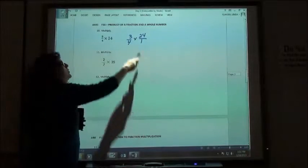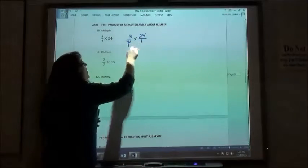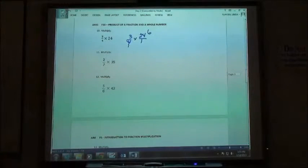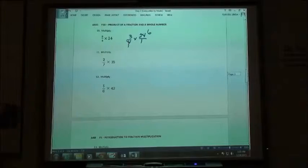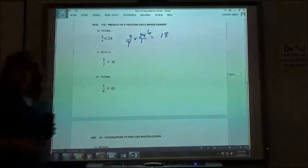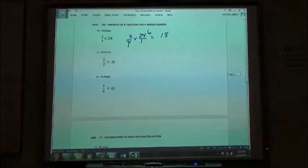So first thing I'm going to do is reduce my fraction. 4 divides into 24 six times, right? And then I'm going to multiply my numerators. 3 times 6 gives me 18. I get 18 over 1, so I just leave it as 18, because 18 divided by 1 is still 18.